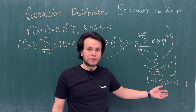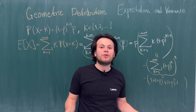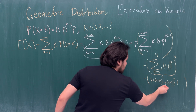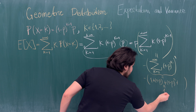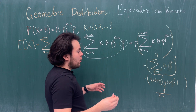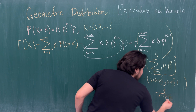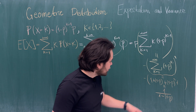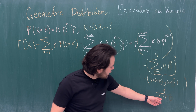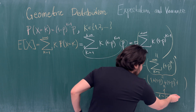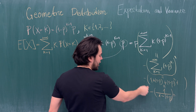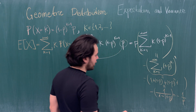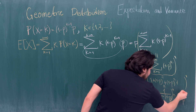This is a geometric series with ratio (1-p), which is less than 1. The sum from k=0 to infinity of (1-p)^k equals 1 divided by (1 - (1-p)) = 1/p. Including the minus sign from differentiation, we have minus the derivative of 1/p.